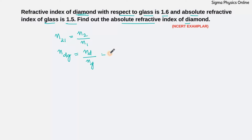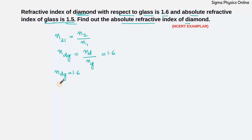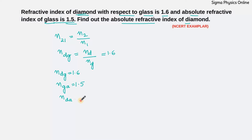This value is given as 1.6. The refractive index of diamond with respect to glass is given as 1.6, and the absolute refractive index of glass — that is the refractive index of glass with respect to air — is given as 1.5. We need to find out the refractive index of diamond with respect to air.